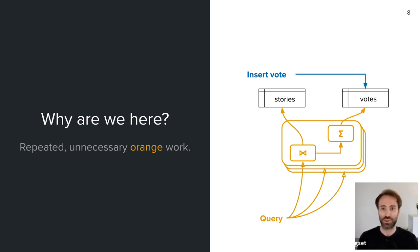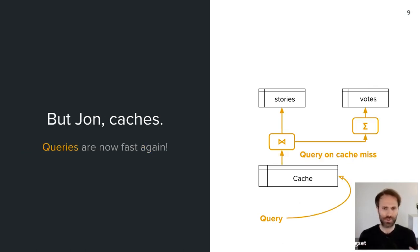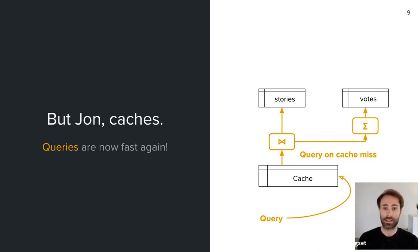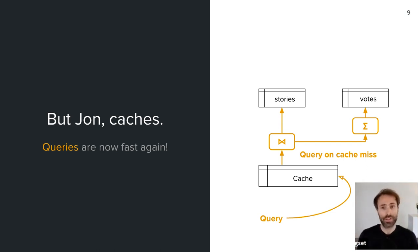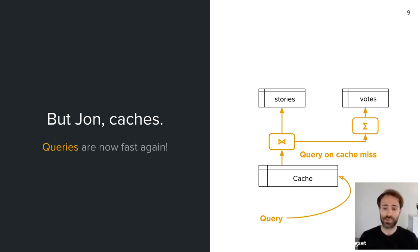You might say this problem has been solved — just use a cache. Caches are essentially a storage system placed in front of your database. Queries look in the cache, and if the result is there, they return immediately. Only if you miss in the cache do you issue a query to the backend database. There's also denormalization, where you store and maintain derived values like the number of votes for a story in the stories table, with a similar effect.